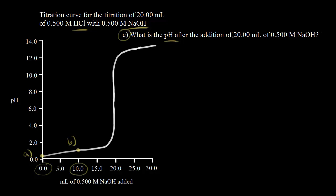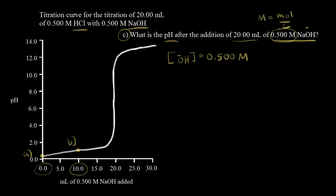Part C asks: what is the pH after the addition of 20 mL of a 0.500 molar solution of sodium hydroxide? To answer this, we need to find how many moles of hydroxide ions we're adding. We can figure that out from the concentration. The concentration of NaOH is 0.500 molar, which is also the concentration of hydroxide ions since this is a strong base. Molarity is moles over liters.